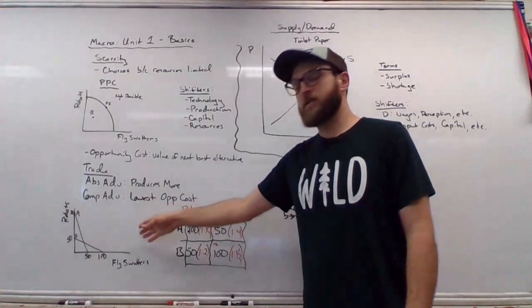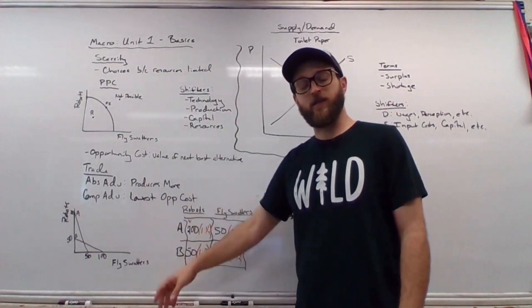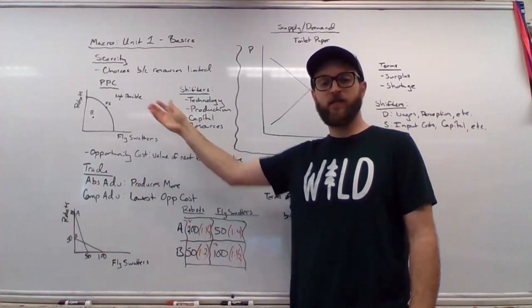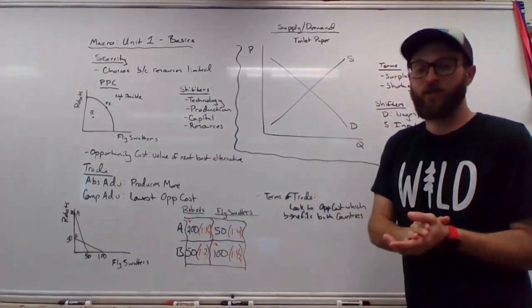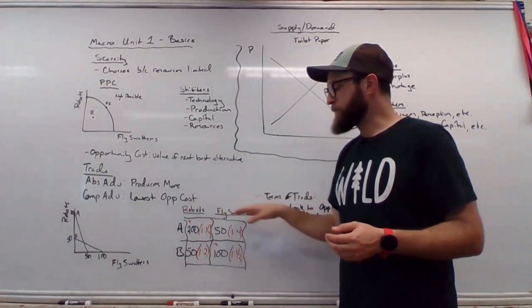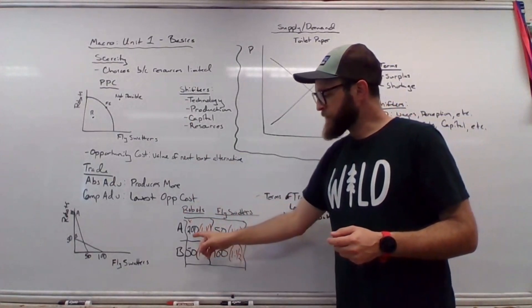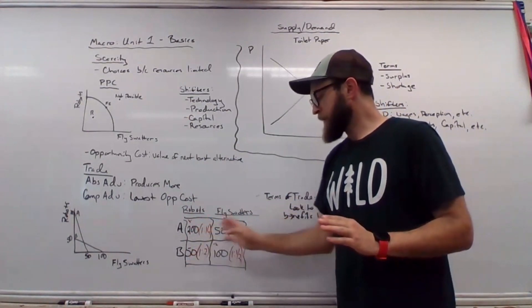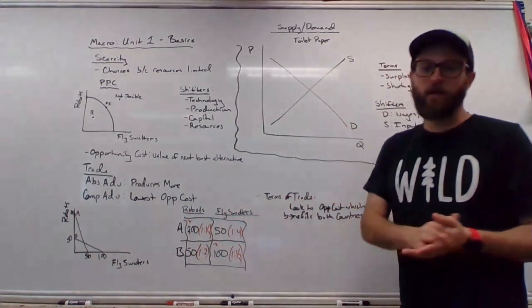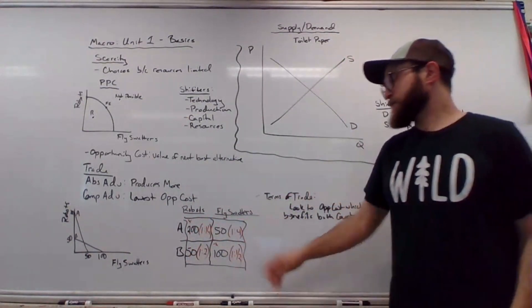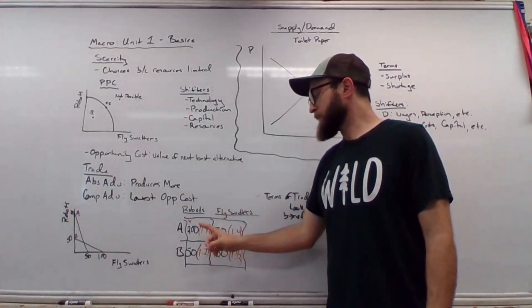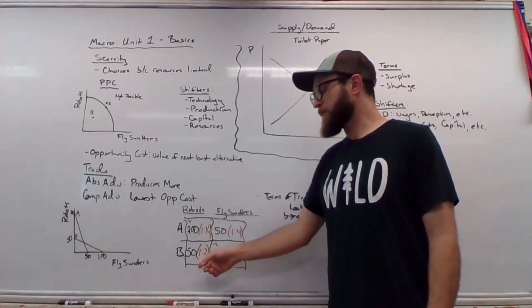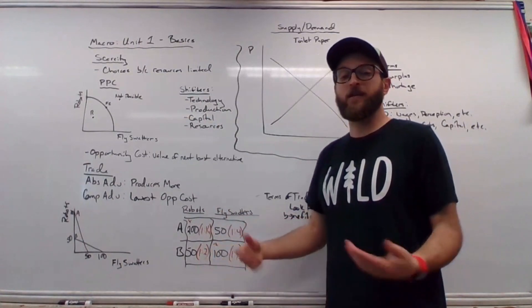Once you get a constant opportunity cost production possibility curve, you know it's constant because the lines are straight instead of bowed out. That would be increasing opportunity costs. I highly recommend you make the chart: put the countries on the left, the objects up top, and then put the absolute advantage—the total production possibility numbers—on the left side. Then in parentheses on the right, calculate the opportunity cost. So for country A to produce one robot, we sacrifice one-fourth fly swatter. Conversely, country B to produce one robot, we give up two fly swatters.